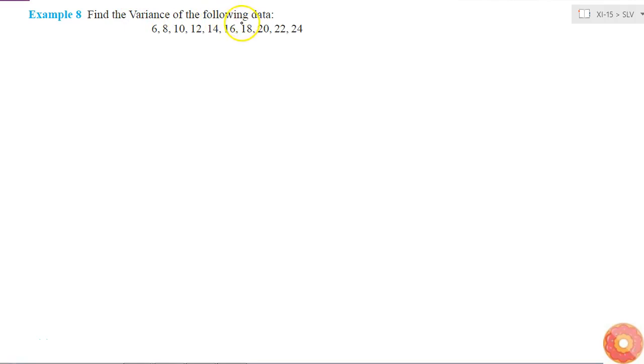Here I have to find the variance of the following data. I know that my variance, which is denoted as σ², is equal to summation over i equals 1 to n of (xi minus x̄)² divided by n. This is the value of my variance, so for that I need